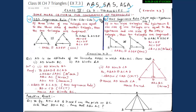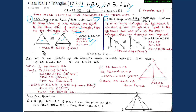First, we will study side-side-side congruency criteria. The definition says that if three sides of one triangle are equal to the three sides of another triangle, then the two triangles are said to be congruent. Consider triangles ABC and DEF, where AB equals DE, AC equals DF, and BC equals EF. Therefore, triangle ABC is congruent to triangle DEF by the side-side-side congruency rule.